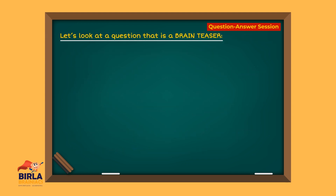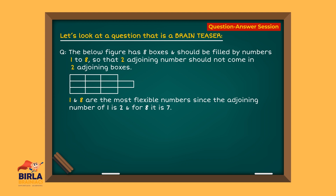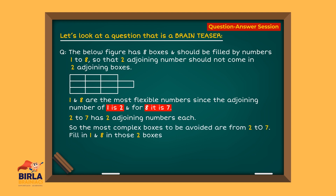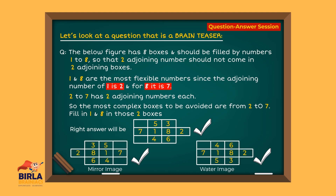Let's look at a brain teaser. The figure has 8 boxes to be filled with numbers 1 to 8 so that two adjoining numbers should not come in two adjoining boxes. Numbers 1 and 8 are the most flexible, since the only adjoining number of 1 is 2 and for 8 it is 7. Numbers 2 to 7 each have two adjoining numbers, so fill 1 and 8 in those complex positions. The mirror image and water image of the resulting figure are also correct answers.